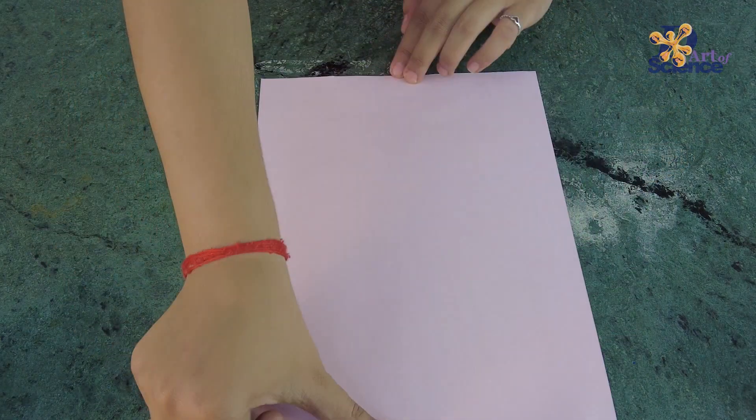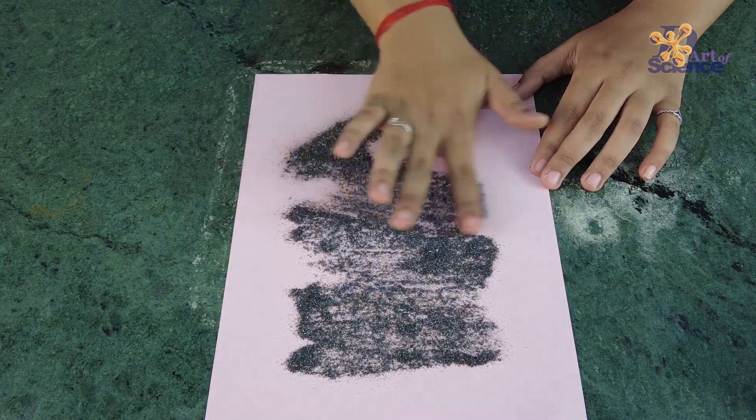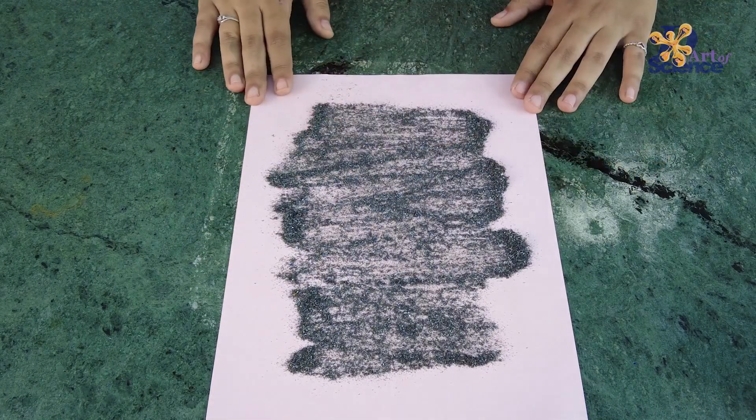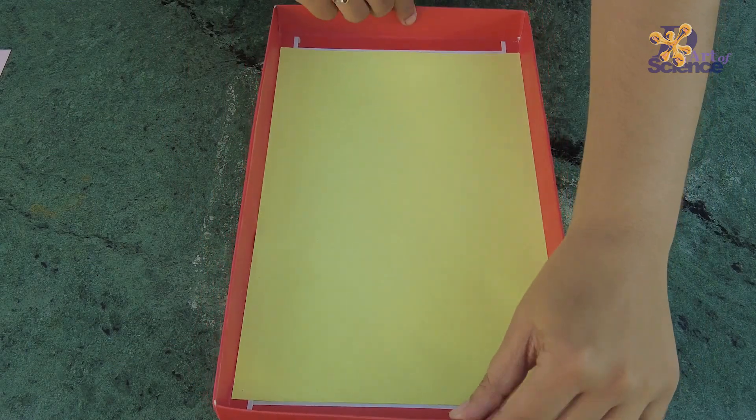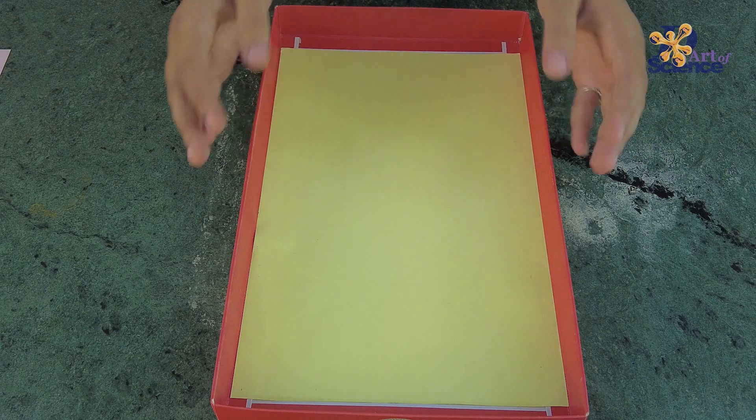First, take a piece of paper. Take some iron filings. Put it on the piece of paper and spread them as shown. Next, take the lid of an empty cardboard box and make sure that the width of the box is slightly less than the width of the paper.